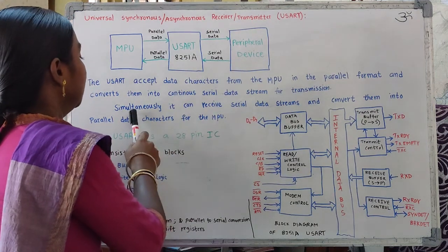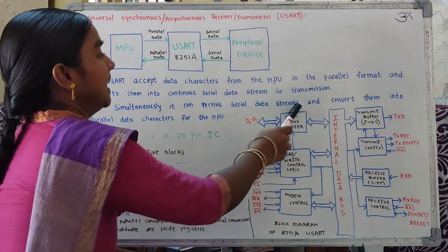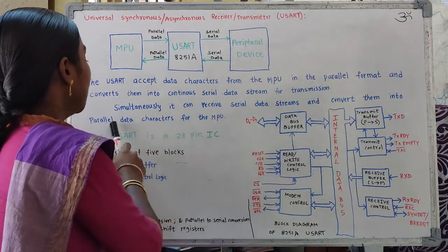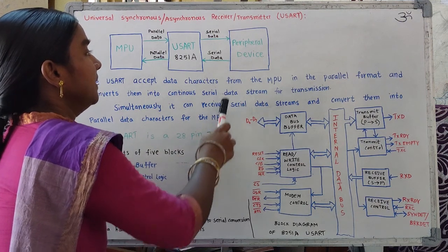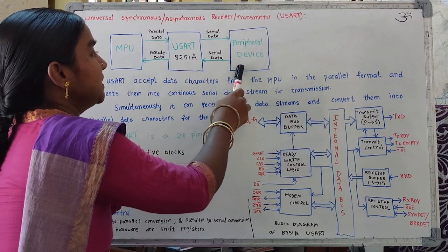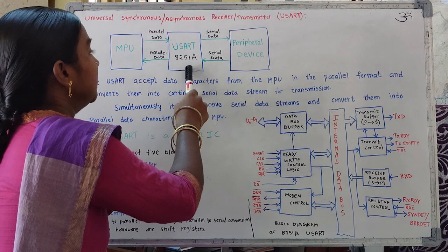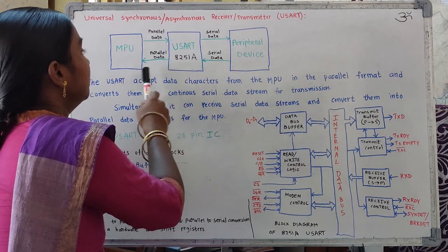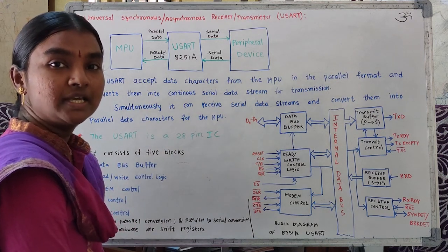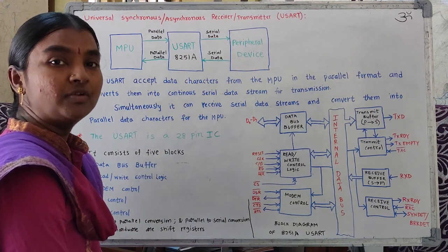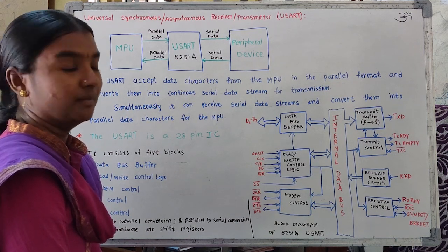Similarly, the USART can receive serial data streams and convert them into parallel data characters for the microprocessor unit. When receiving serial data from the peripheral device, this serial data is converted into parallel form for the microprocessor unit. So the main function of USART is conversion of data from parallel to serial and simultaneously from serial to parallel.